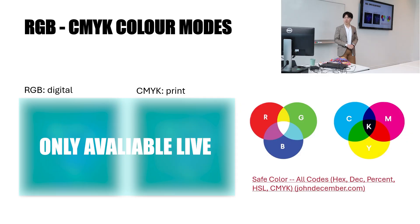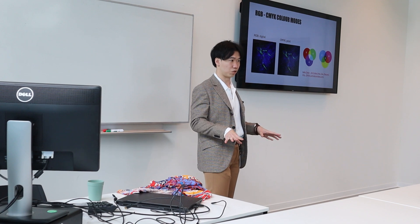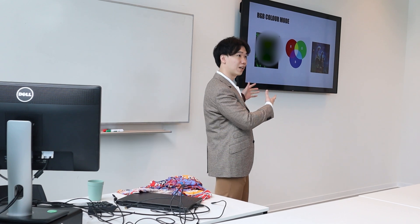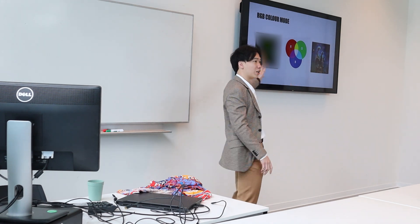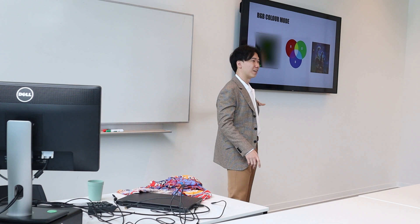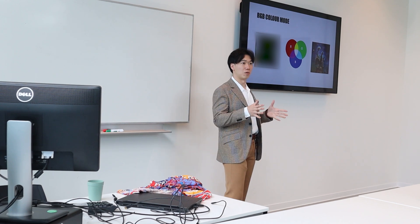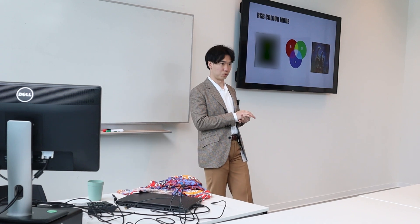The first topic is RGB and CMYK color modes. These are the two main color modes you have to get right before you start designing anything on a computer. RGB stands for red, green, and blue. This is a very common color mode — for example, in microscopic imaging of cells, immunostaining labels actin and microtubules with different colors, usually red, green, and blue. That's exactly RGB.